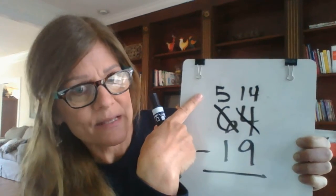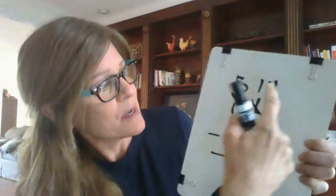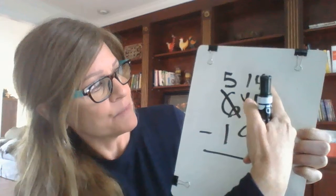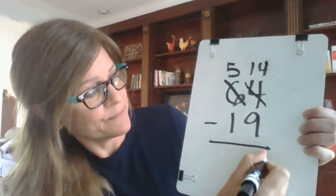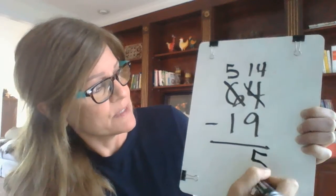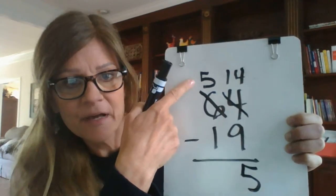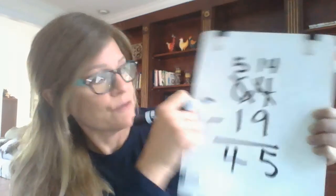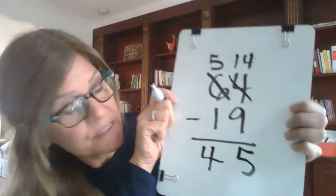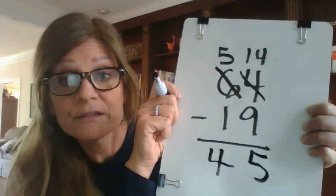Now I've regrouped. Once I've done this, the rest is much easier. I'm still going to start at my ones column. 14 minus 9 is 5. And then I go to my tens column. 5 minus 1 is 4. So 64 minus 19 is 45.